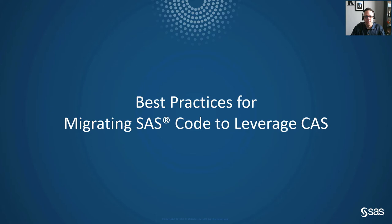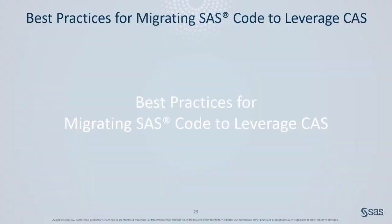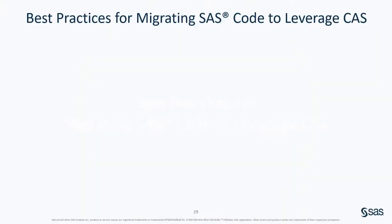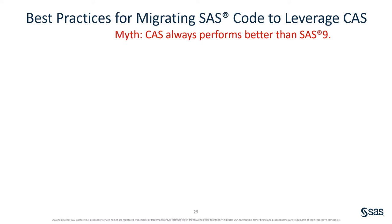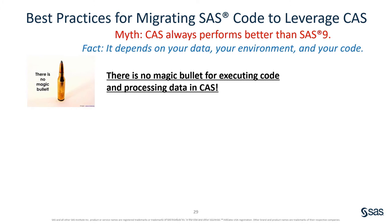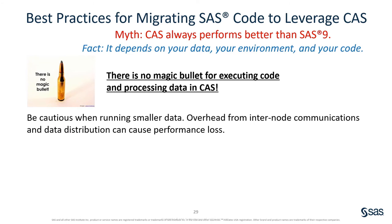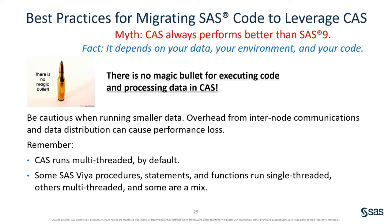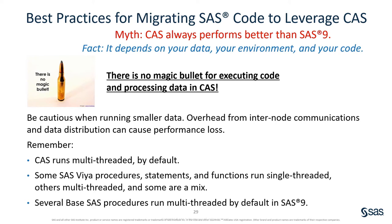In this next section, I'll cover some best practices for migrating your SAS 9.4 code to leverage CAS. One of the biggest myths around CAS is that it will always perform better than SAS 9. The truth is, it depends on your data, your environment, and your code. There is no magic bullet for executing code and processing data in CAS. Be very careful when running code against small data in CAS, especially a distributed CAS environment. Overhead from internode communication and data distribution can result in performance loss. Remember, by default CAS runs multi-threaded. Some SAS Viya procedures, statements, and functions run single-threaded, others run multi-threaded, and some are a mix of both. Several base SAS procedures also run multi-threaded by default in SAS 9.